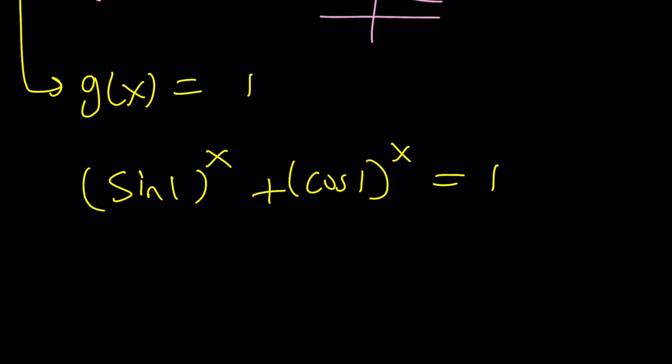At this point, you should definitely remember that we have something called Pythagorean theorem for trigonometry, and that is sine 1 squared plus cosine 1 squared equals 1, because sine squared alpha plus cosine squared alpha is always 1. So what does that mean? That means x equals 2 is a solution. But since there's only one solution, that is the solution.